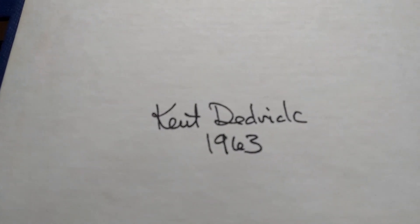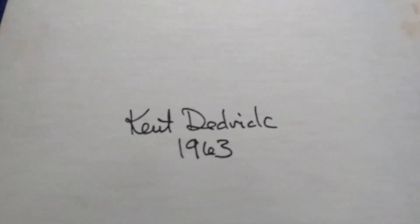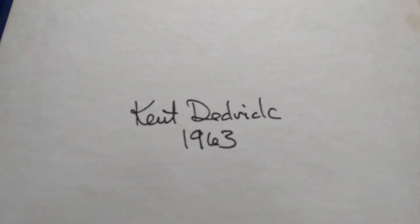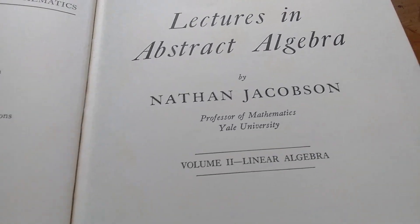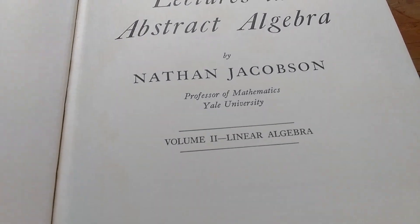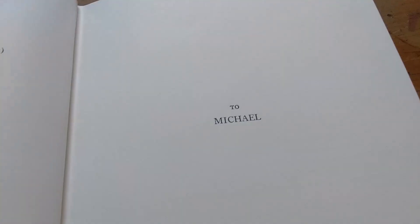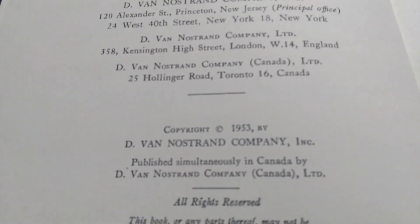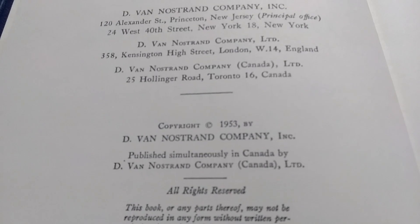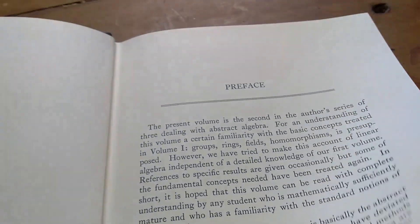This is the second book, on linear algebra. It looks like it's signed by someone — 1963. I wonder where that person is now; that was a long time ago. Let's look at the table of contents. This is the linear algebra volume. I think there are only two volumes, though I'm not sure. The copyright on this one is 1953, whereas the other one was 1951.